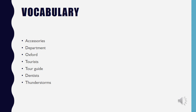We must have a look at vocabulary. The first word, which is really difficult to understand, is accessories. What is accessories? Accessories are things which can be added to something else in order to make it more useful or attractive.